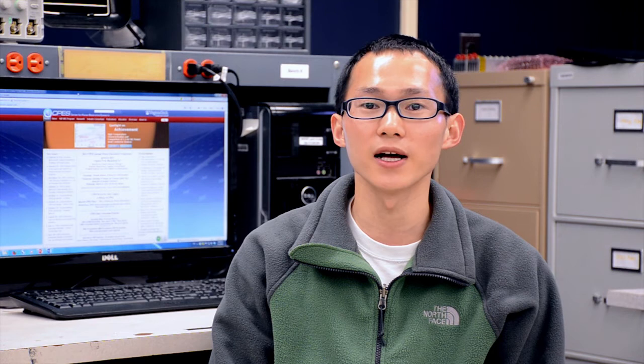Hopefully this model will serve as a powerful tool for designing and understanding purposes. Let me give a brief introduction of V-square control. The output voltage is fed back and used twice: one through a direct feedback without any compensation, and the other comes through a simple integrator to provide the control signal.